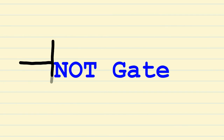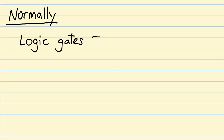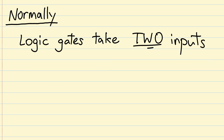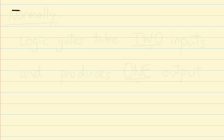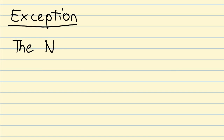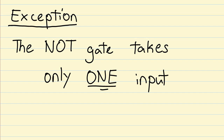The logic gate we'll look at right now is the not gate. If you remember from the first episode, I told you logic gates take two inputs and produce one output. The not gate is the exception — it takes only one input, producing output based solely on that one input.